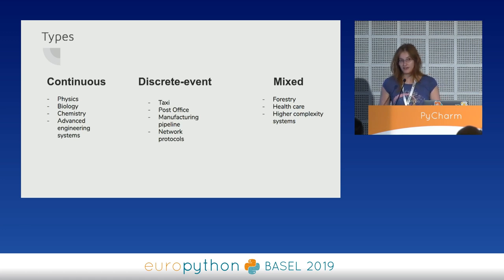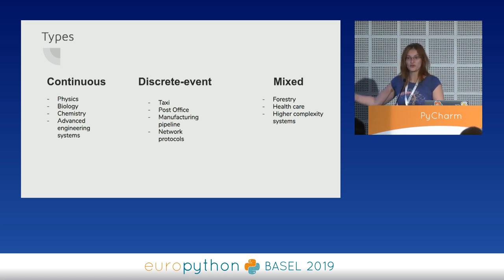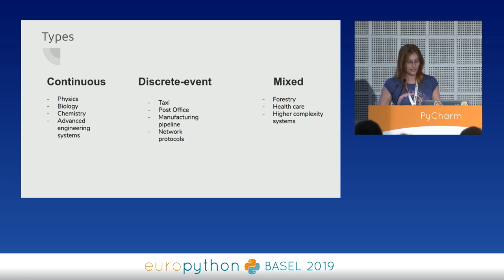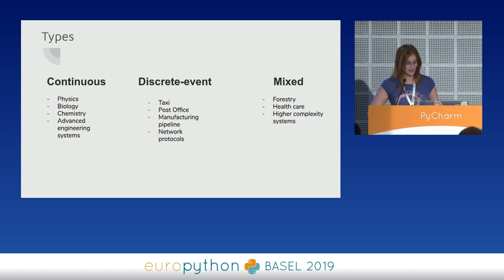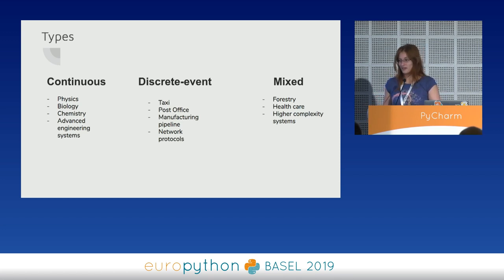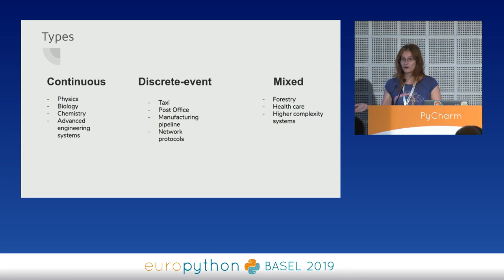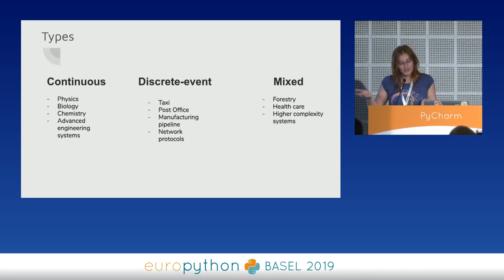In mixed simulations, you can define a certain event dispatching system that says these resources are dispatched, and then the system decides how to proceed further, or if there are side effects that can be described in a continuous way. Forestry is a good example — you have a natural way of a forest growing or recovering from a fire, but you can also dispatch discrete events like humans planting a forest or starting a fire. So it's a mixture of both.